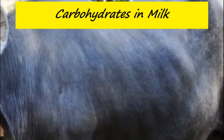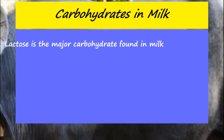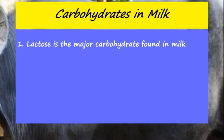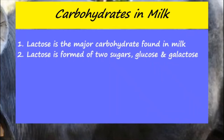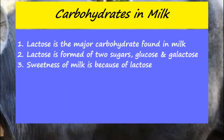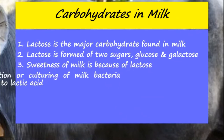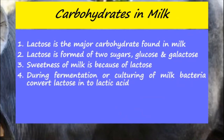Carbohydrates in Milk: Lactose is the major carbohydrate found in milk. Lactose is formed of two sugars: glucose and galactose. The sweetness of milk is only because of lactose. During fermentation or culturing of milk, bacteria convert lactose into lactic acid.